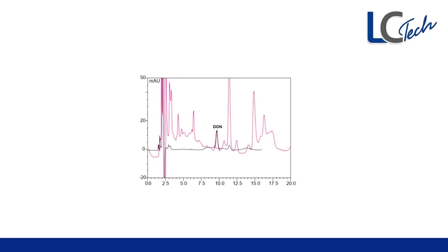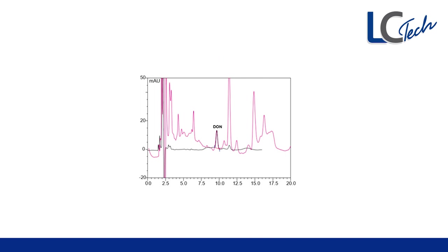As you can see in the chromatogram, the matrix reduction and matrix interferences are shown in red, in comparison to the sample cleaned up using the Crosstox column, where fewer impurities are shown in the UV chromatogram. You get a more pure sample and less dirt transferred into the LC-MS, which would otherwise stick to the sweep comb or accumulate in the F-Lens or Q1 to Q3.